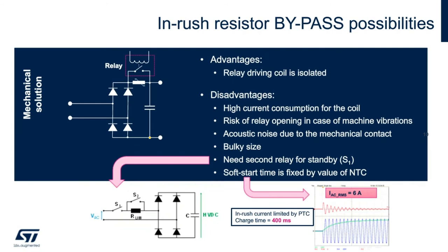Taking a step back to the simple series resistor method: you can use a relay to bypass this resistor and largely eliminate the conduction losses due to ICL. Many implementations will use a second relay in series with the current limiting resistor to implement a standby mode in which the power supply is fully disconnected from input power. One advantage of this approach is the isolation of the relay driving coil from the high-voltage electronics. However, there are many disadvantages: coil current consumption adds to losses, mechanical relays are subject to wear and potentially sparks, relays have audible clicks when enabled, they can be bulky, and there's no control over the soft start time since it's purely set by the value of the NTC. We need to address these problems with the SCR.